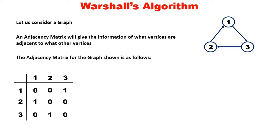So the number of 1s in this adjacency matrix will be exactly equal to the number of edges in the given graph. So we understood what is an adjacency matrix. Next, we will understand what is a path matrix.